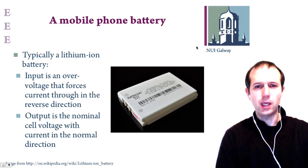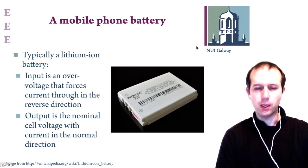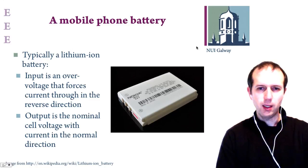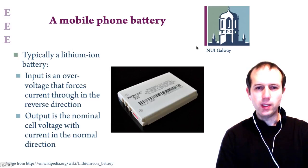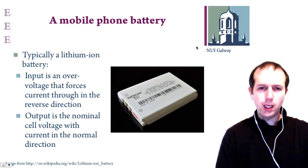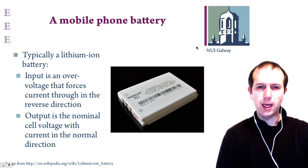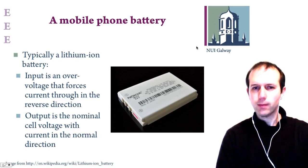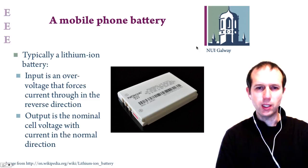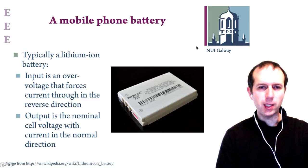Batteries basically have an input and an output. The output is basically the voltage and the current that it supplies to the circuit system in the mobile phone. The input is normally when it's in the charging process, which basically works by a constant current being applied to the battery until such time as the voltage in the battery rises to what's called an overvoltage — basically a battery voltage that's greater than the rated voltage.